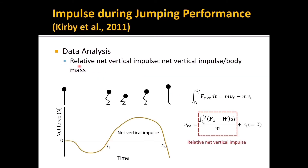Relative net vertical impulse was calculated by dividing net vertical impulse by body mass. On the force-time graph, force means net force (ground reaction force minus body weight), and the area between initial time and takeoff time represents net vertical impulse. The time integral of net force gives net vertical impulse, which causes a change in linear momentum. Dividing net vertical impulse by body mass gives the relative net vertical impulse, from which takeoff velocity can be obtained.